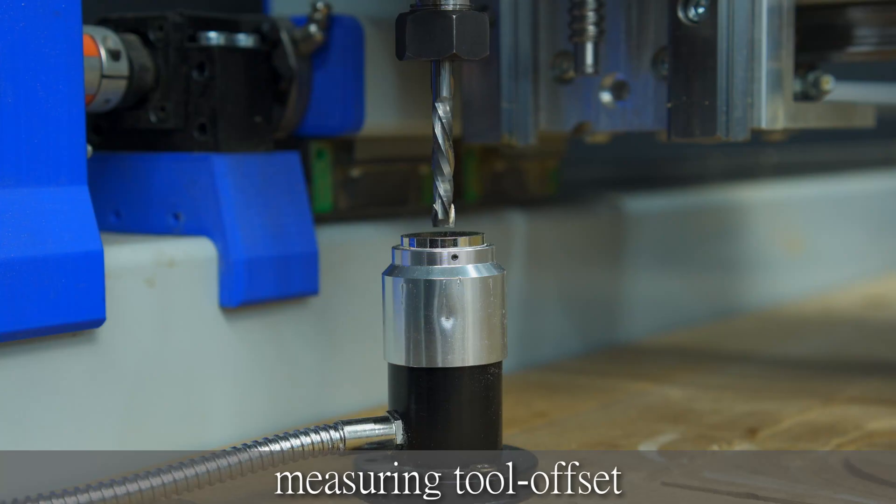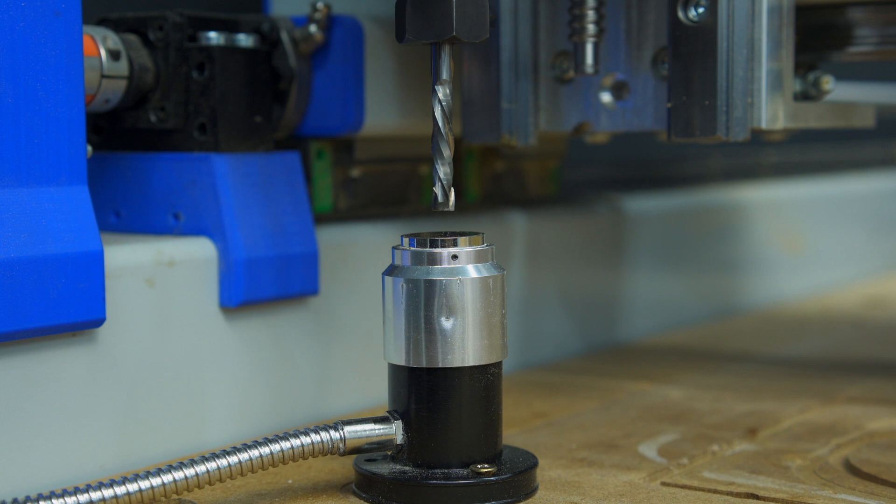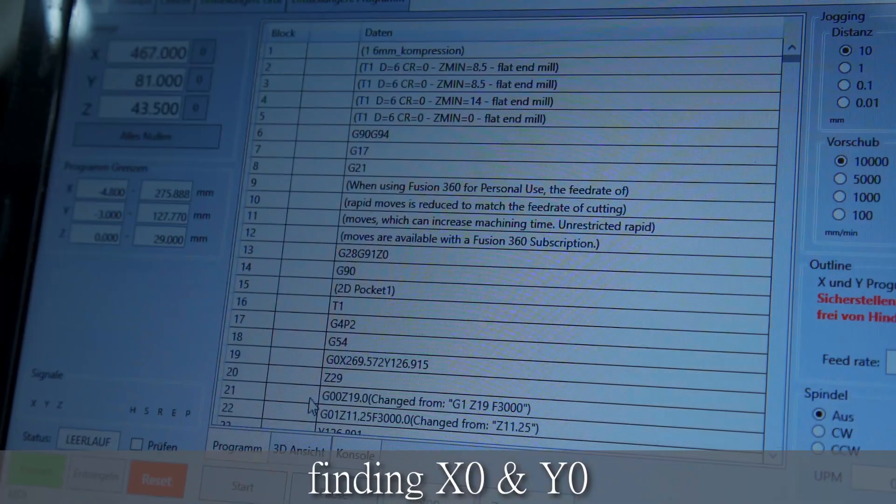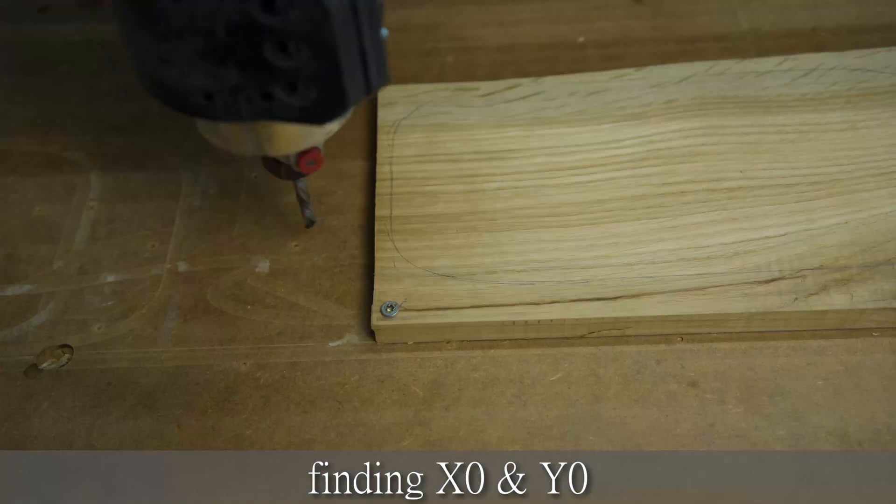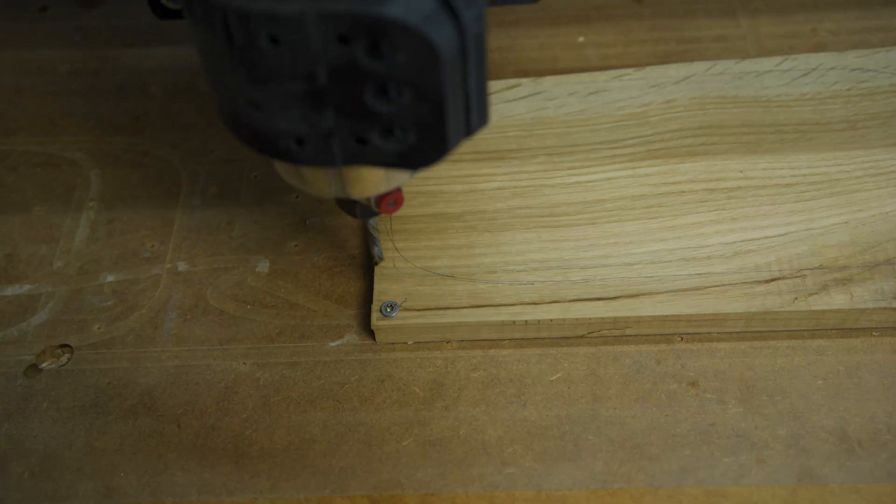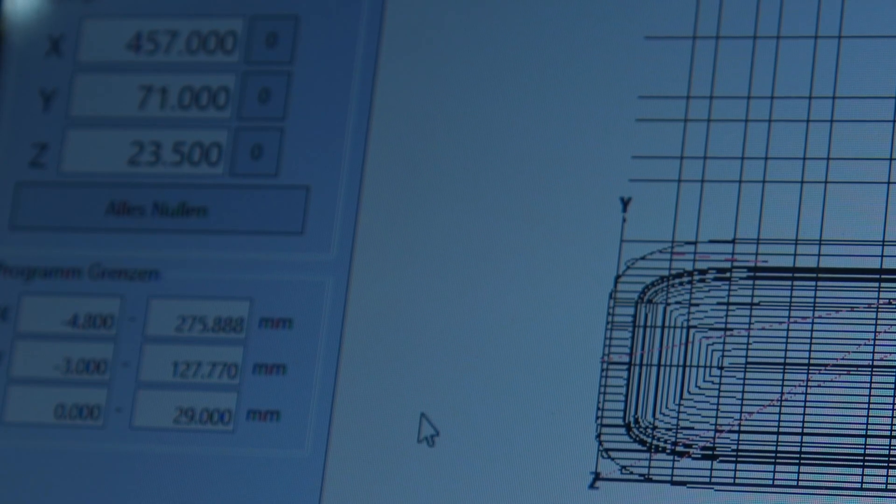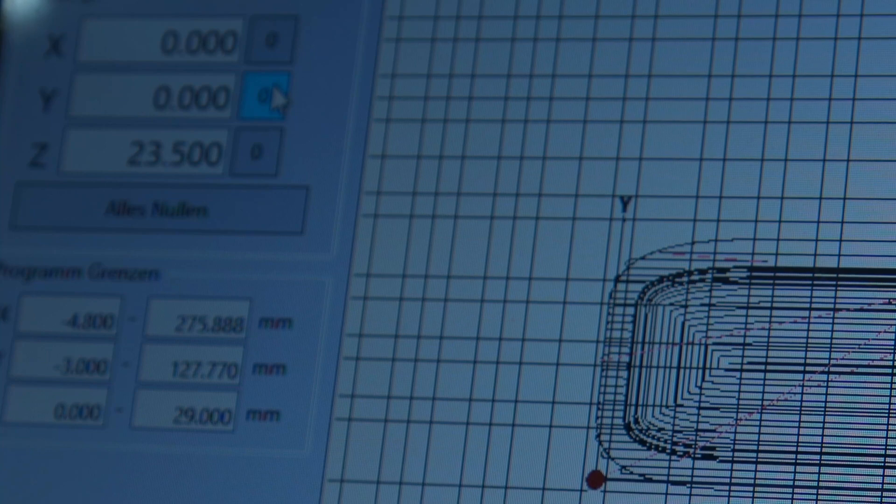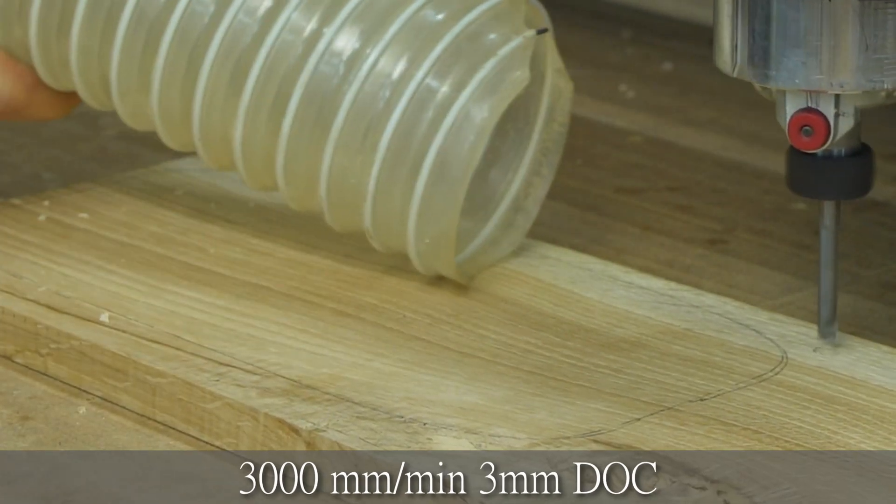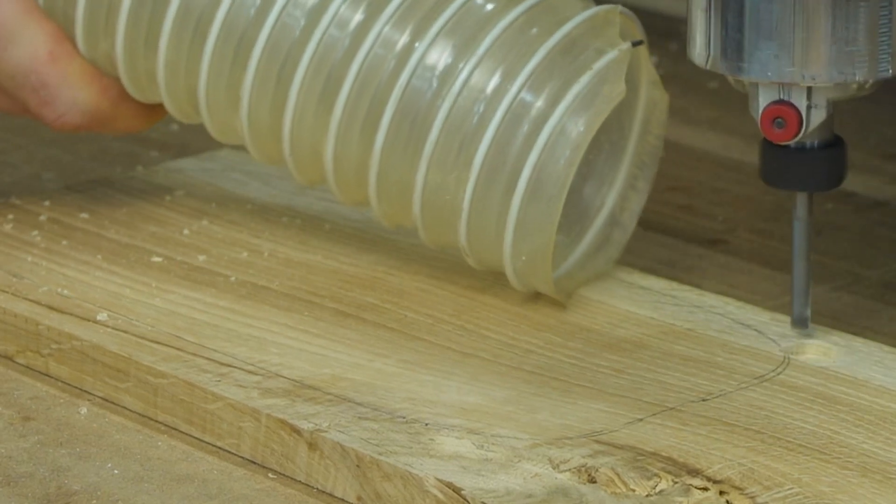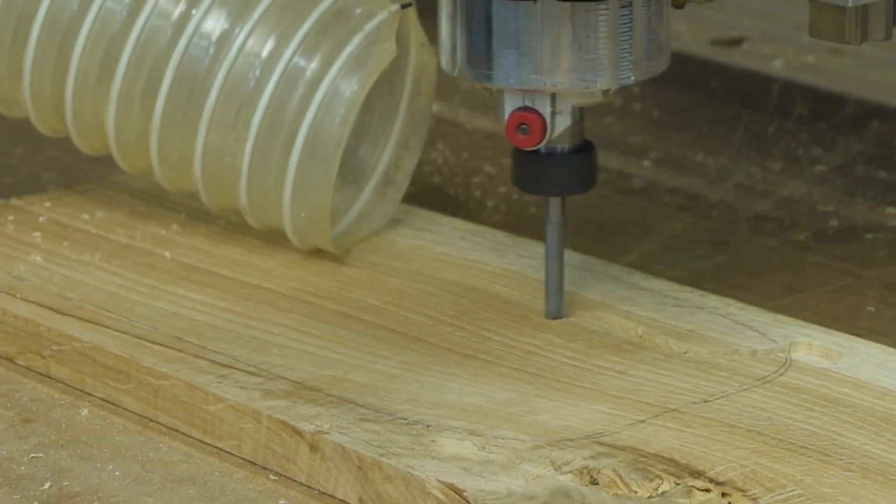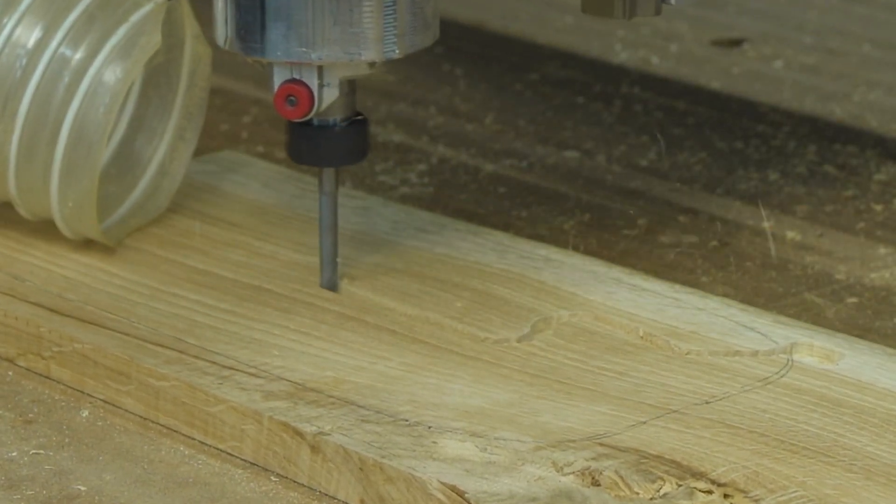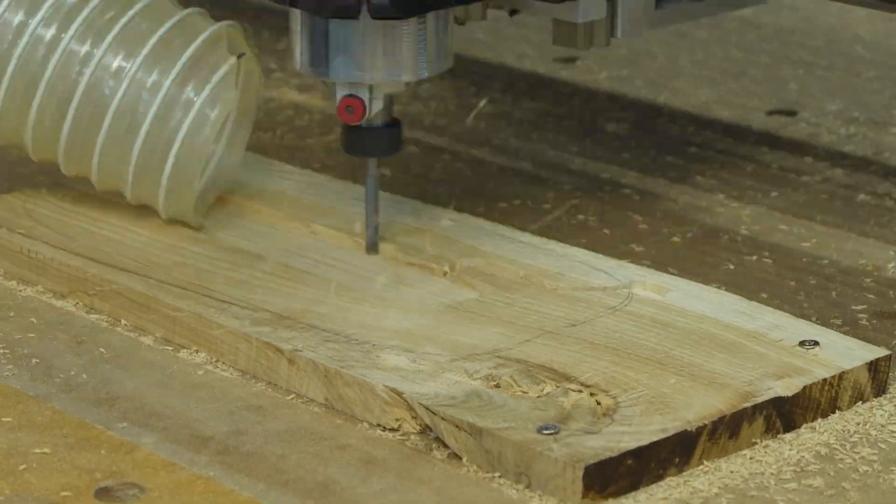With the tool height setter I only need to find the wasteboard height once and from there only measure the offset. We start out with a pocket toolpath to clear out the inside, then a 3D adaptive for an inside rounded corner, and then a simple contour toolpath to cut out the workpiece.